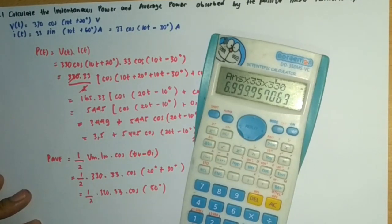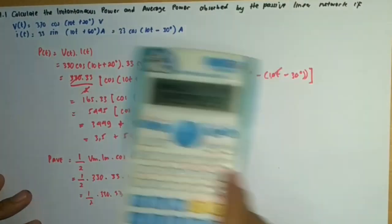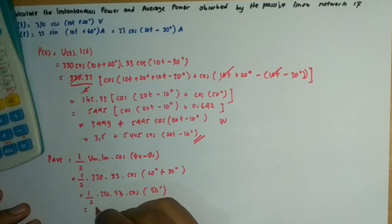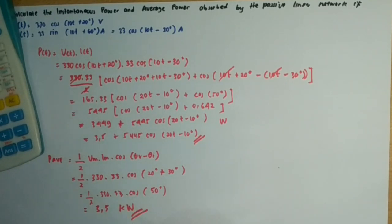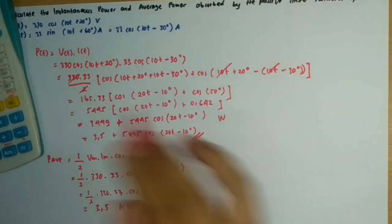330 multiplied by 33, divided by 2, times cos(50°), gives us the final result: P_avg = 3.5 kilowatts. This is the final result of the whole equation.